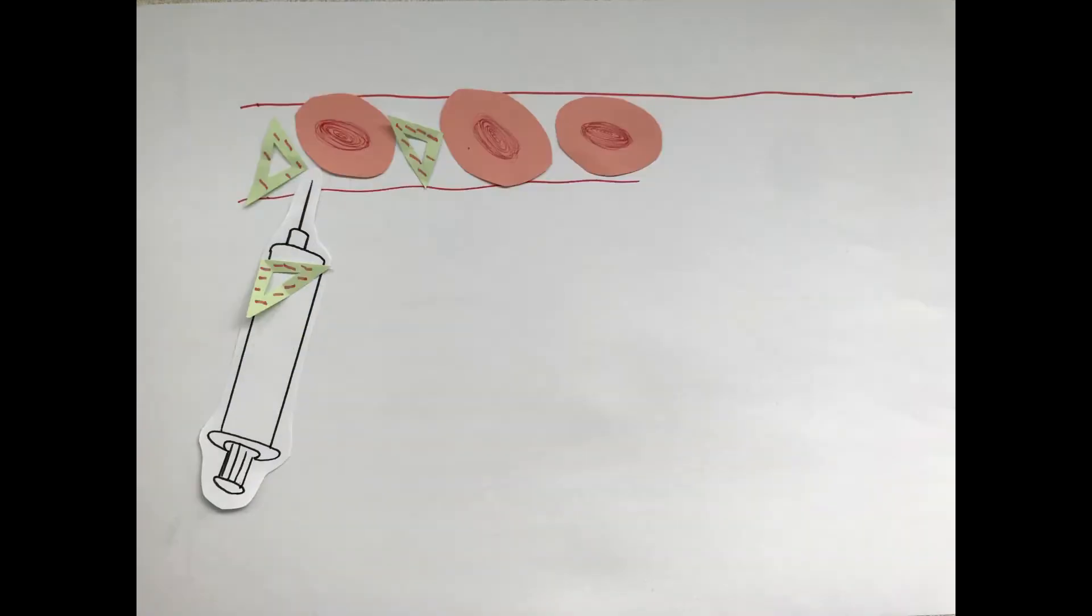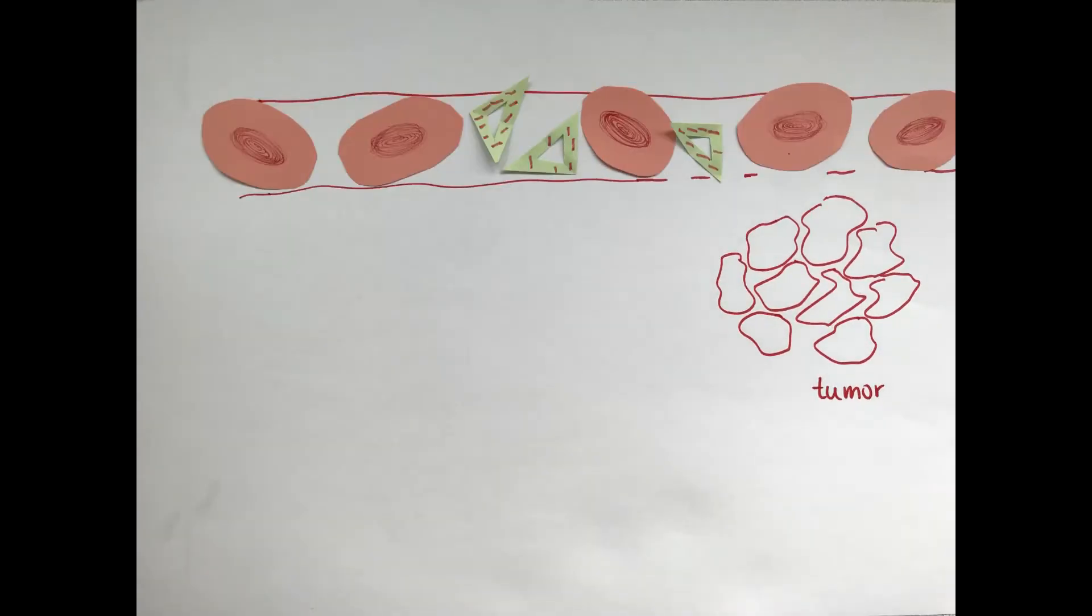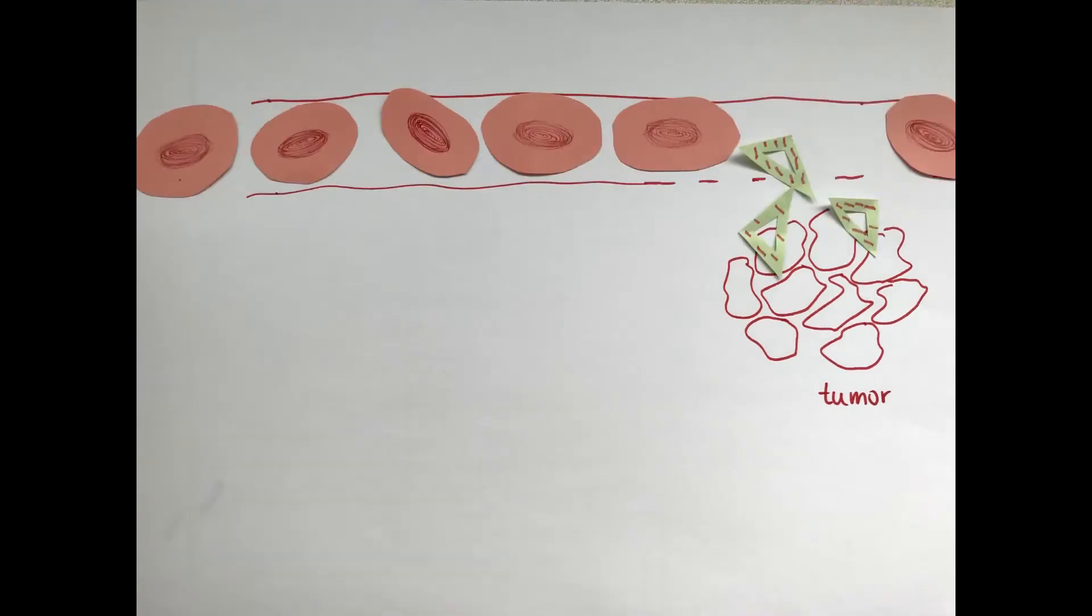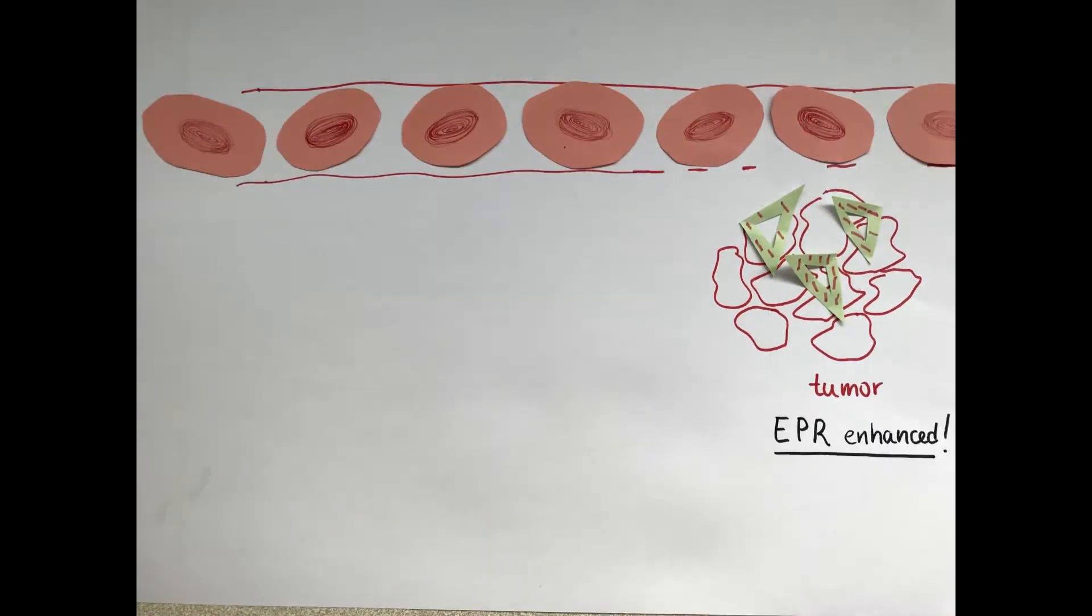You introduce these structures in the organism through injection. They travel through the bloodstream and exit at tumor sites where the vasculature is non-cohesive, thus making it leaky. They accumulate there because of the enhanced permeability and retention effect, also known as EPR.